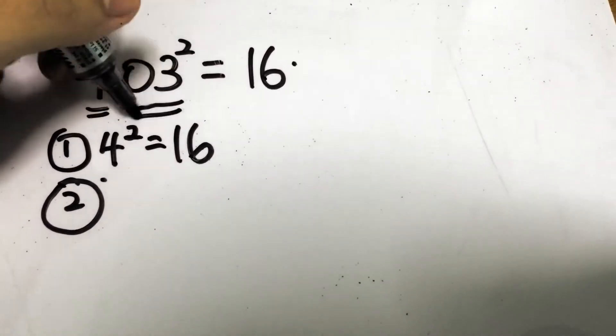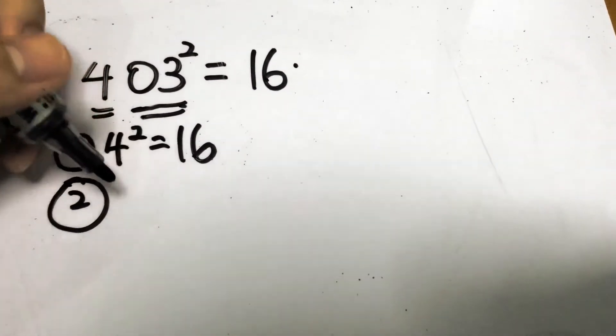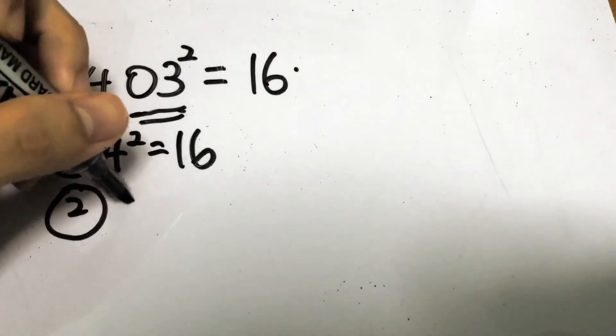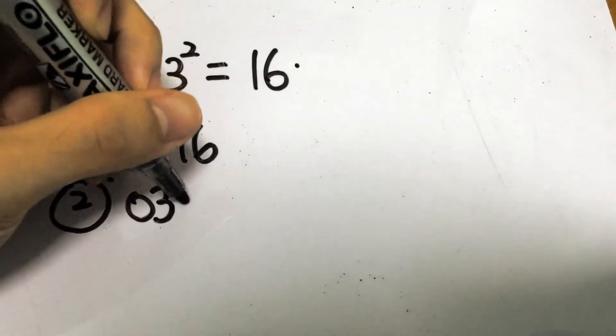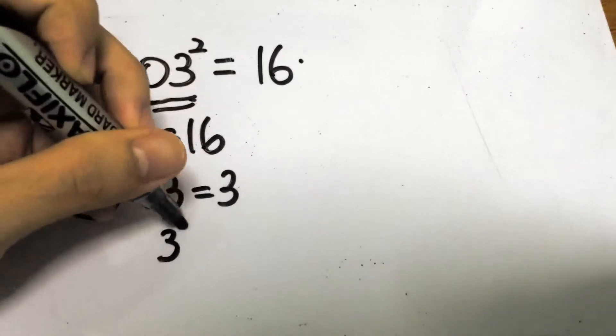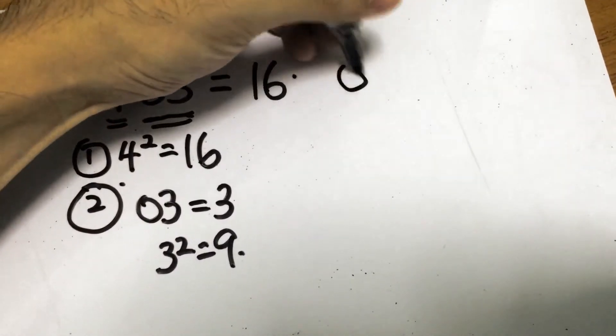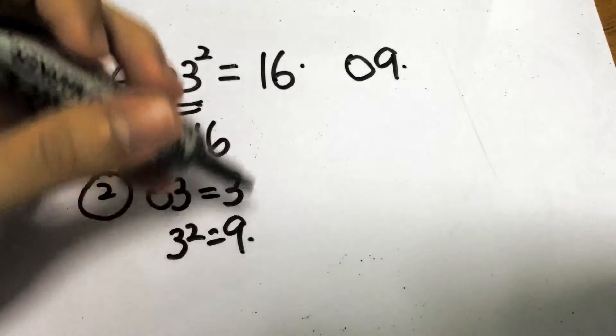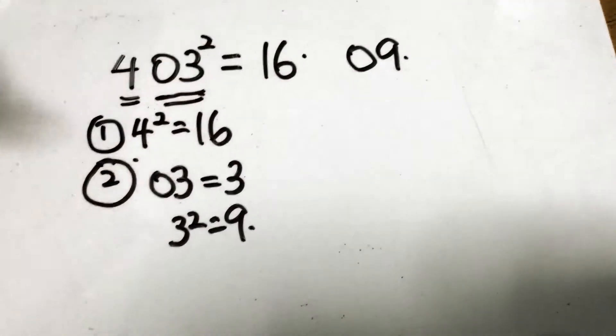And the second step is to take the last two values and we square it. So we got 03 is just the same as 3 and 3 squared goes to 9. So the last two digits is actually 09 instead of putting just 9 down there.